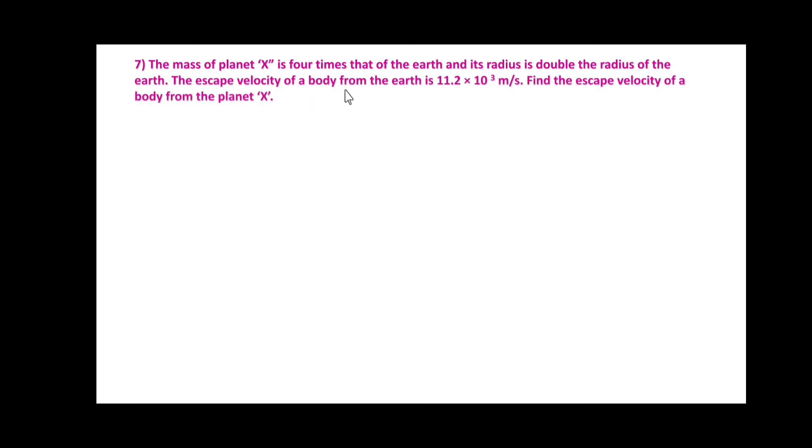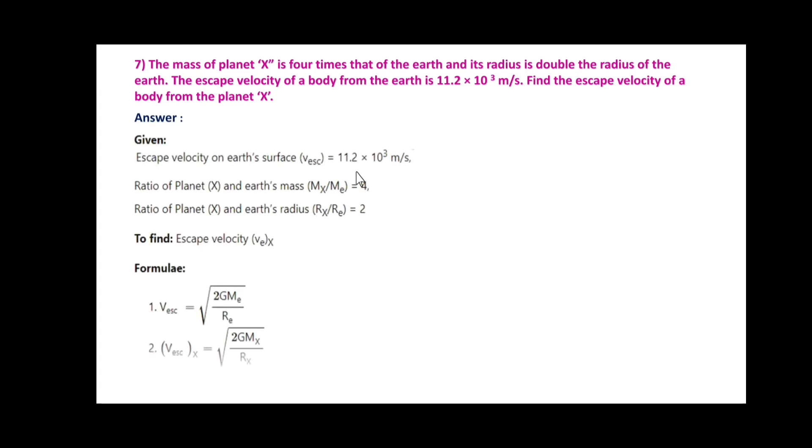The mass of planet X is four times that of the Earth and its radius is double the radius of the Earth. The escape velocity from Earth is 11.2×10³ m/s. Find the escape velocity from planet X. Given: Vescape = 11.2×10³ m/s, ratio Mx/Me = 4, ratio Rx/Re = 2. To find: escape velocity VEX.